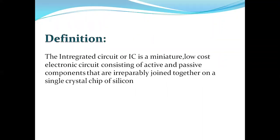Next, what is the definition of an IC? An IC is a miniature, low-cost electronic circuit consisting of active and passive components that are irreversibly joined together on a single crystal chip of silicon. That means in a single silicon wafer we can join both active and passive elements together.